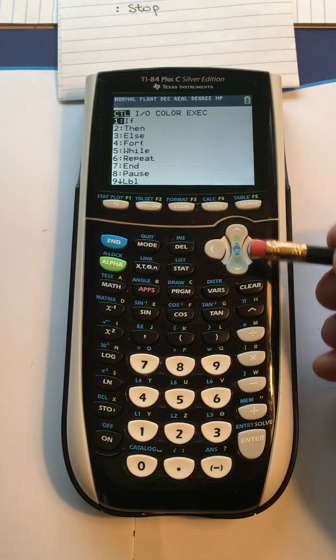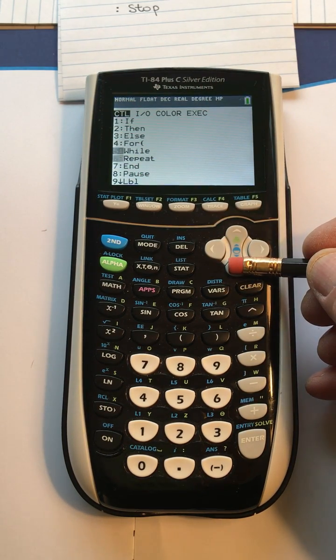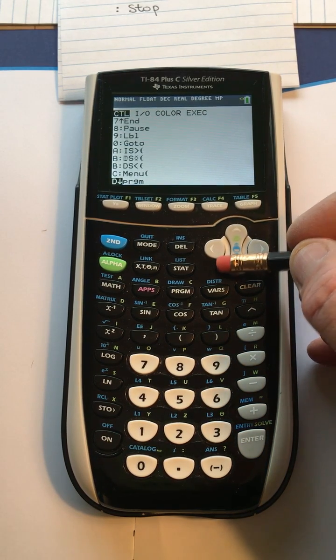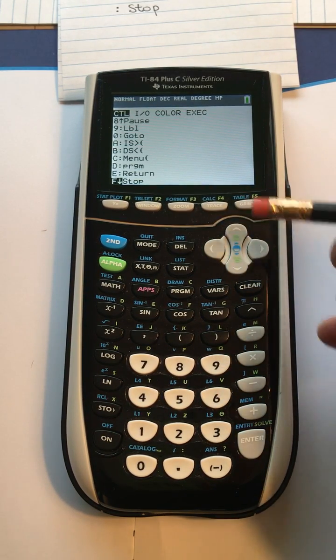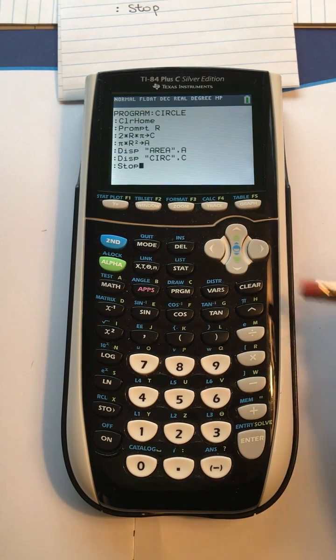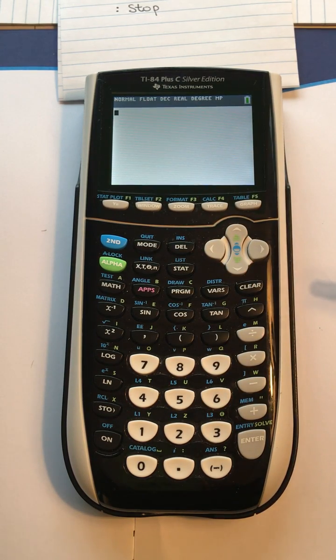So we press program to get a command, and stop is in the control column. If you scroll down until you get to stop, keep going until you get to stop, and there it is. You press enter and now you've completed the program. So we do second quit to leave it to try it out.